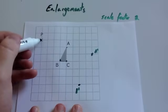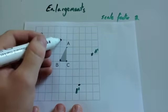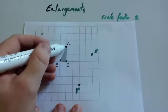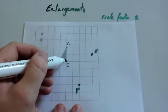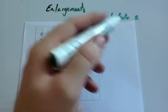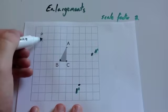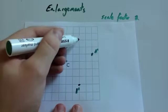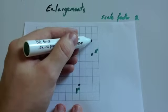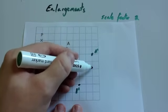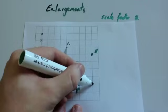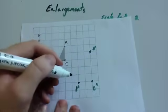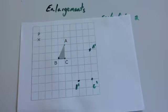Finally the point C. C is 4 across and 3 down. When we use scale factor of enlargement 2 that would be 8 across and 6 down. And that's ended up where we expected it to end up. C dash. We then use our ruler and we join up those points.